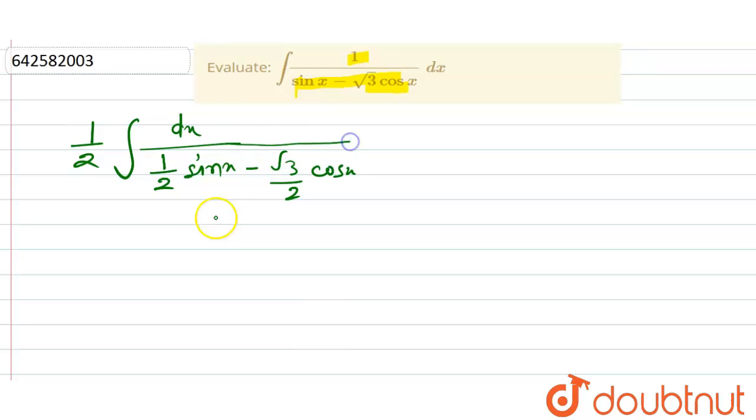Now, we can write 1 by 2, that is, this is 1 by 2 into integral dx upon, we can write 1 by 2 is equal to cos pi by 3.